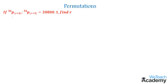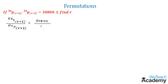In the next step, we can write the given condition as 56P(r+6) divided by 54P(r+3) is equal to 30800 divided by 1. Now let us apply the formula: nPr is equal to n factorial divided by (n minus r) factorial.